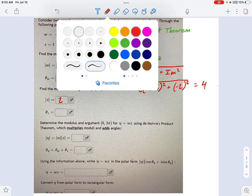Now we can get into the more interesting parts. What are the arguments of each of these? Theta for w is equal to the inverse tangent of the imaginary part divided by the real part. So if you look at w, the imaginary part is negative 2, and the real part is negative 2 radical 3.